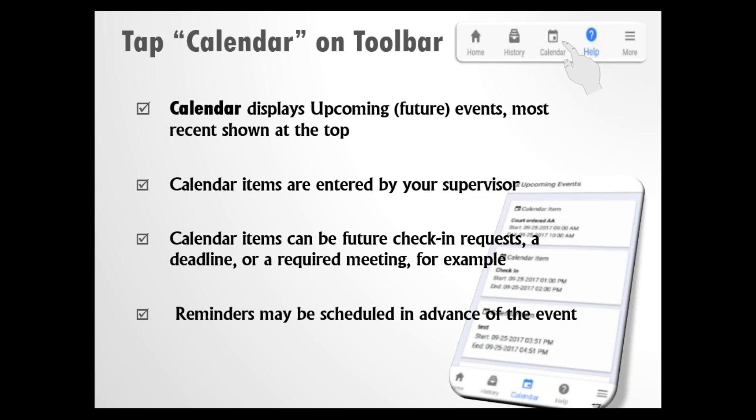Tapping on Calendar will show you your upcoming events, with your most recent shown at the top. Calendar items are entered by your supervisor only and could be check-in requests, a meeting, or when fees are due. Your supervisor can set up reminders for these events. This calendar is completely controlled by your supervisor — only he or she may add items or set reminders. It is intended to be specific to your supervision only and cannot be synced with any other calendar you may be using.